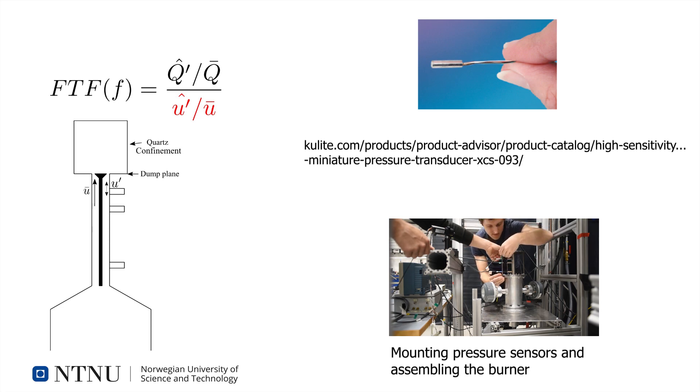The mean velocity can be computed from the flow rates of air and fuel, and the temperature of the mixture.